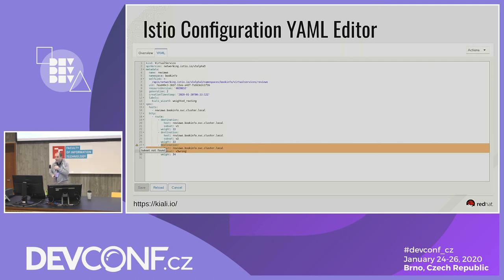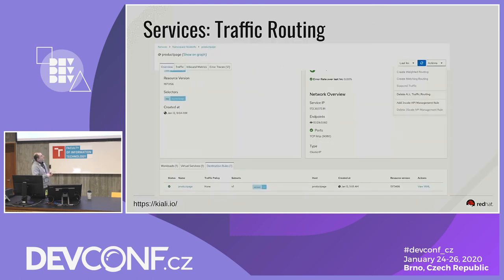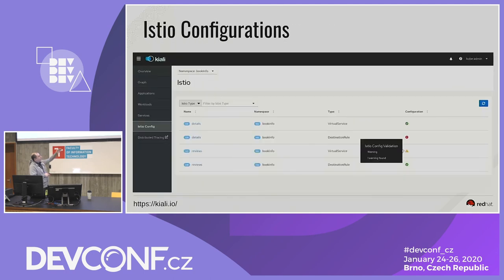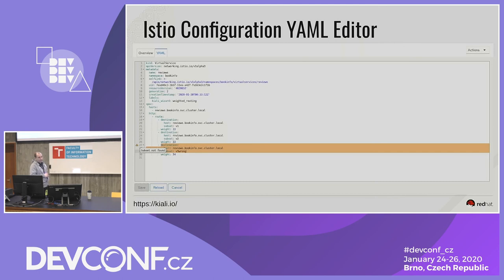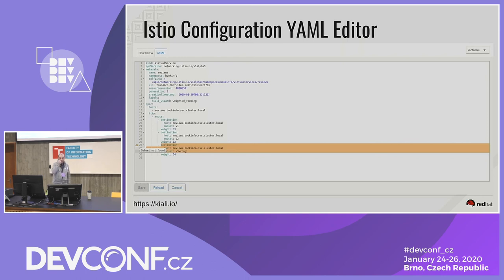Kiali also provides a direct way to configure Istio configuration via a YAML editor. From the page where all Istio configurations are listed, those configuration objects are clickable and lead to a detailed YAML configuration editor for that particular configuration. It comes with validation, so if you break the configuration, Kiali will validate and notify the user that some subset, gateway, host, or port is not found.